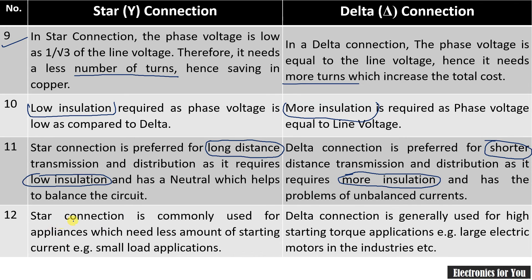Star connection is commonly used for appliances which need less starting current — so if you require less starting current, star connection is preferred. Whereas when high starting torque is needed, high current is required and therefore delta connection is generally used whenever there is a requirement for high currents.